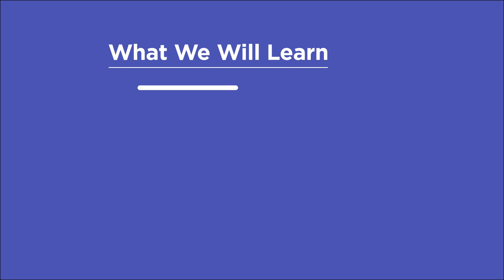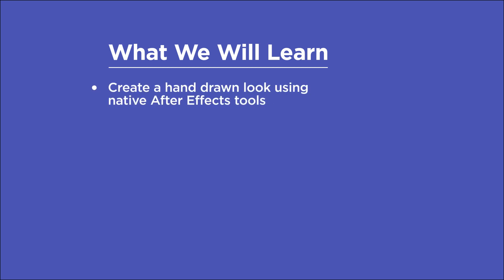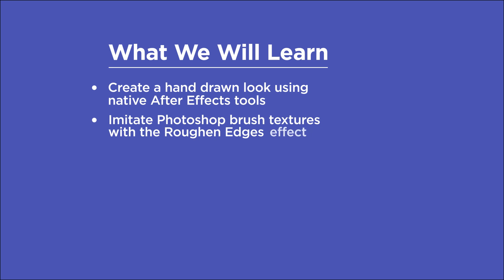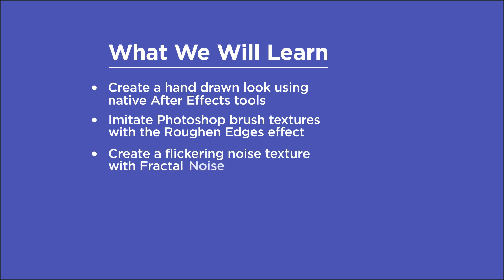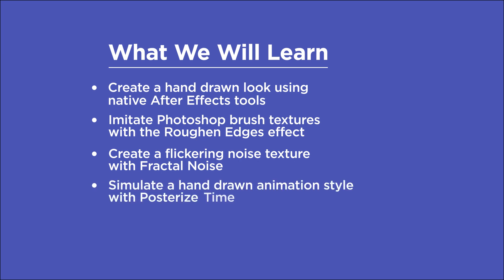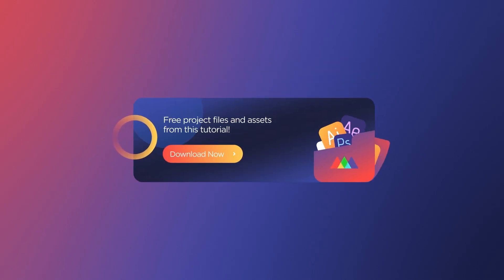We're going to be doing everything just in After Effects — no scripts or plugins needed. In this video, you'll learn to create a hand-drawn look using native After Effects tools, imitate Photoshop brush textures using the Rough Edges effect, create a flickering noise texture with Fractal Noise, and simulate a hand-drawn animation style with Posterized Time. Before we begin, be sure to download the project files in the link below so you can follow along.